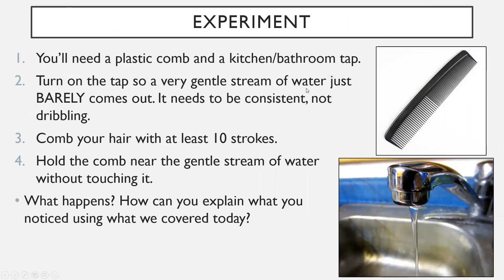Here's a little experiment you can do on your own if you have the materials: all you need is a plastic comb and a kitchen or bathroom tap. Turn the tap on to a very gentle, consistent stream of water — not a full tap, not dribbling, just a very light stream. Take your comb and comb your hair with at least 10 strokes. Then hold the comb near the gentle stream of water without actually touching it. See what you notice. How can you explain what happened using what we covered today? Think protons, electrons, neutrons — all that jazz.